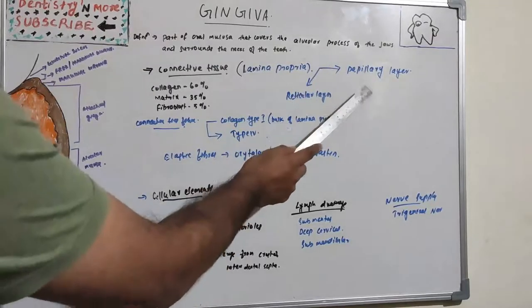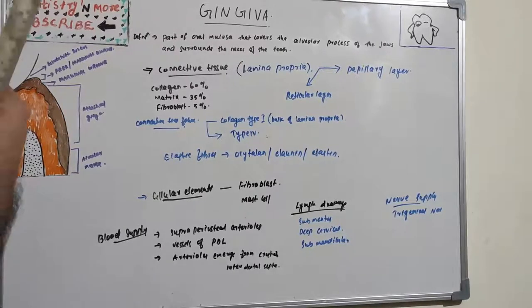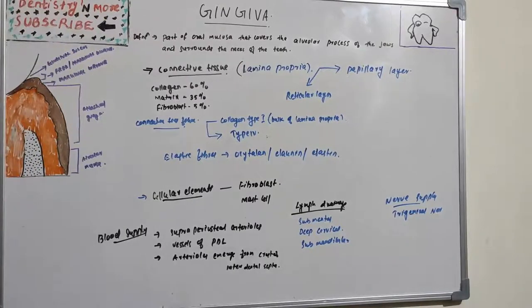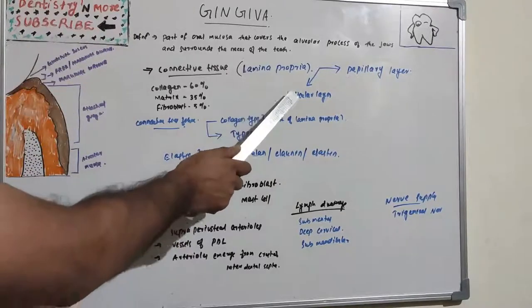The connective tissue of gingiva is known as lamina propria, which has got two parts: papillary layer and reticular layer. This papillary layer is adjacent to the epithelium which consists of papillary projection between the epithelial rete pegs, and reticular layer which is continuous with periosteum of alveolar bone.